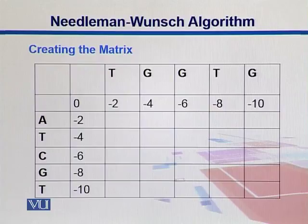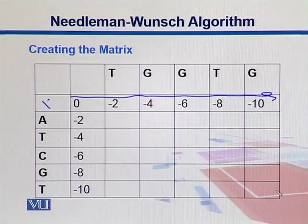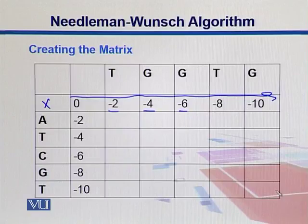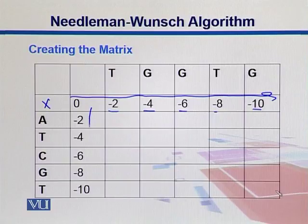We fill up the first row and the first column. When filling the first row, we are changing the column but not the row — we are introducing gaps on the second strand. We keep adding the gap penalty, and since the score is cumulative from the previous score, we get minus 2, minus 4, minus 6, minus 8, minus 10. Similarly, for the first column we change the rows but not the column, giving the same penalties. So our initial matrix is created.